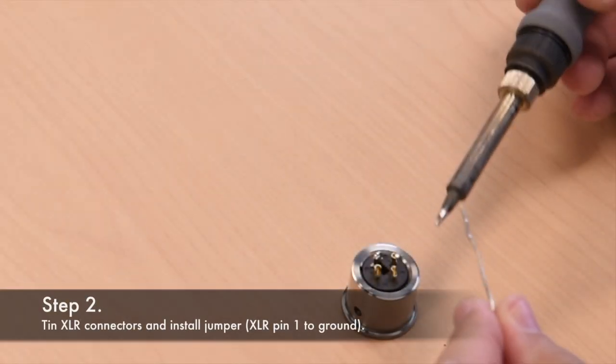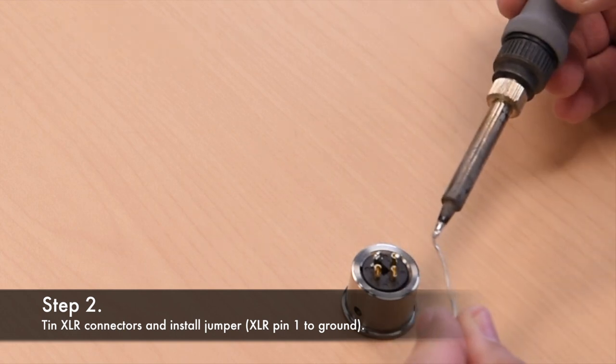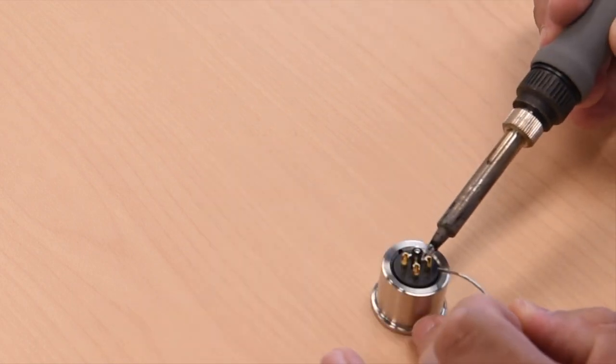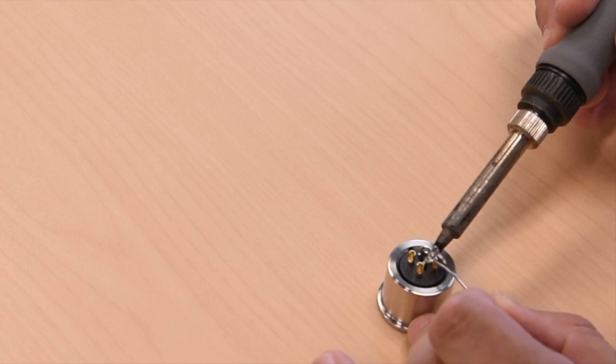It's a good idea to prepare the XLR connector by flowing solder into each of the three hollowed out pins. This will make it easier to install the wires. Be sure to heat the pins, and allow the solder to flow toward the heat.